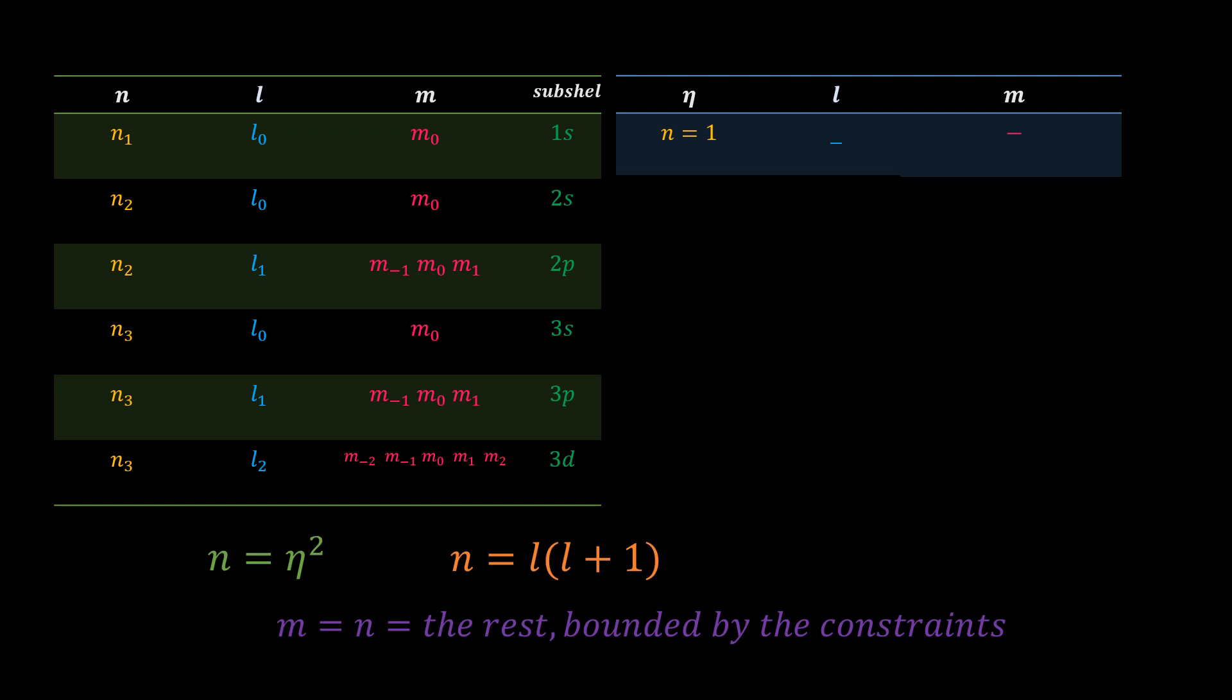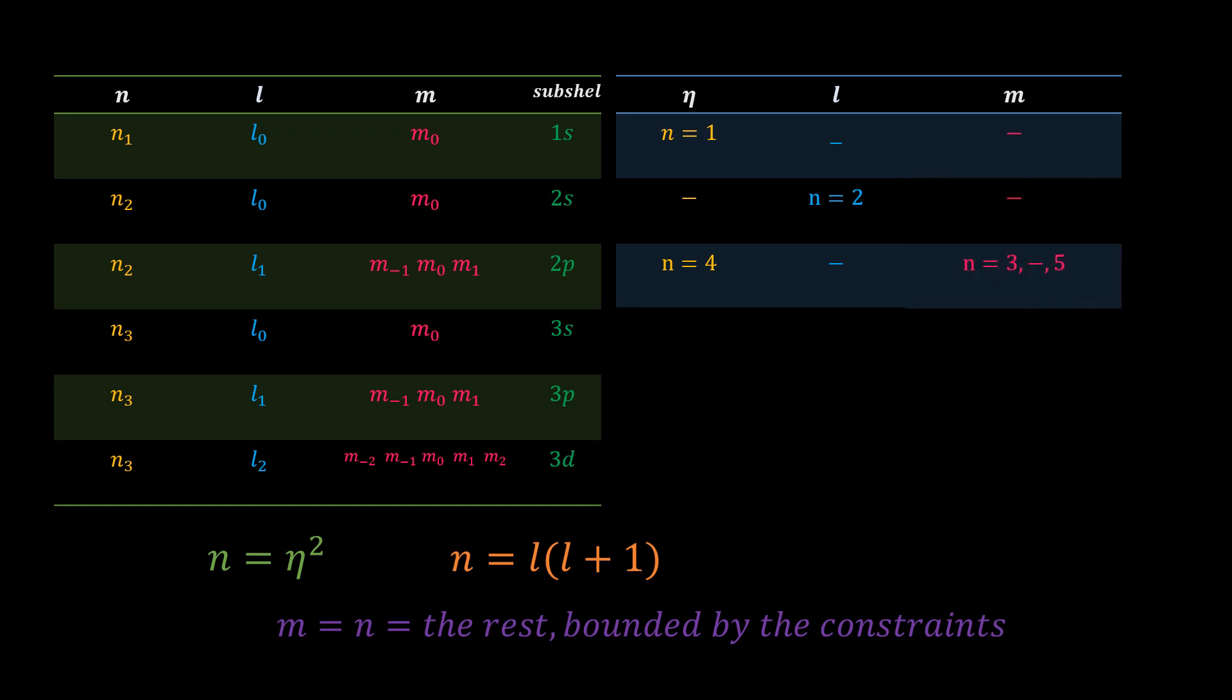Next, for eta equal to 2, n is equal to 2 squared, which is 4. Then l can be 1, but not 0, because 0 produces an orbit that has already been occupied. So putting 1 in the equation below gives 1 times 1 plus 1, which is 2. So we place n equal to 2 under the l column. For this value of l, m is equal to minus 1, 0, and 1, which corresponds to n equal to 3, dash, and 5. The dash is used because m cannot be 0.